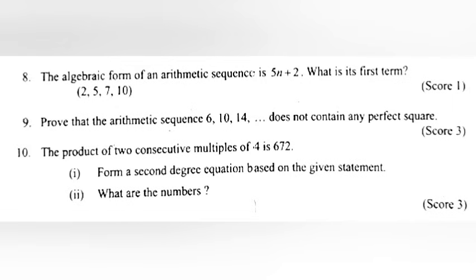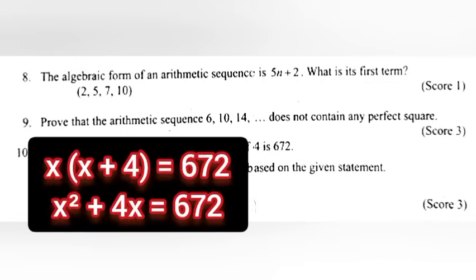Problem 10: The product of two consecutive multiples of 4 is 672. Part 1: Form a second degree equation based on the given statement. Answer: x × (x + 4) = 672, which simplifies to x² + 4x = 672.